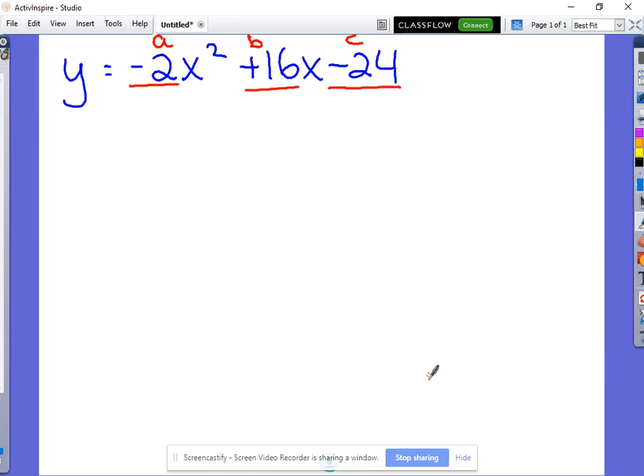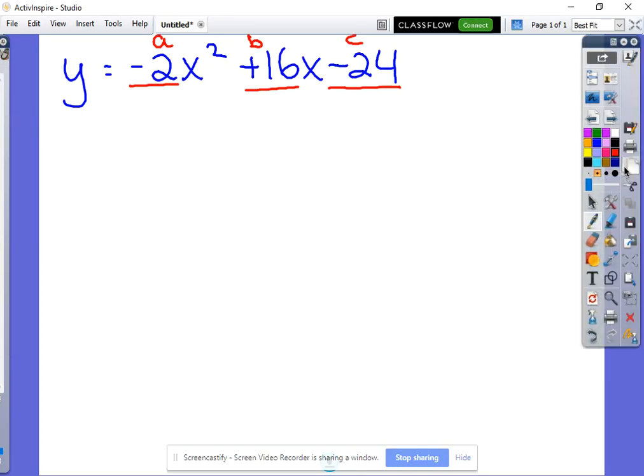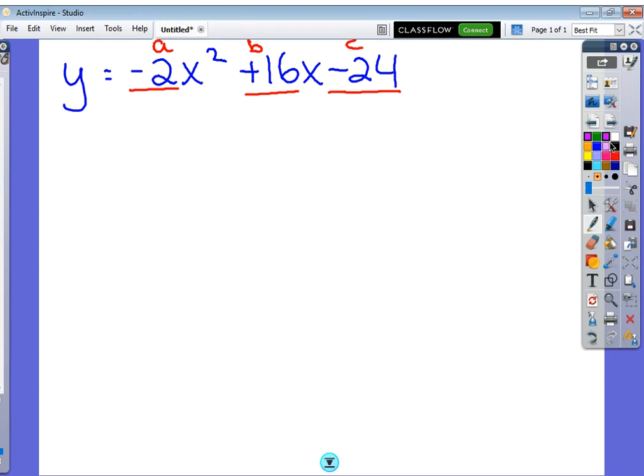Alright folks, so we're going to start off graphing our standard form equation. As a quick reminder, our a value in this case is negative 2, our b value is positive 16, and our c value is negative 24.